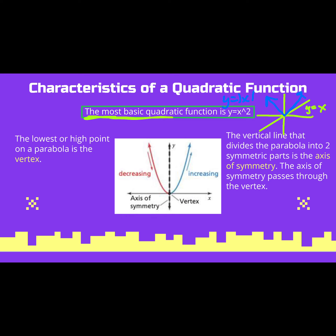First, on the far left: the lowest or highest point of a parabola is the vertex. So you can see in this picture the vertex would be right there in the middle, and it would be the lowest point of our parabola. If our parabola is facing down — if it's negative — then our vertex would be at the top, so it would be the highest point on our parabola.